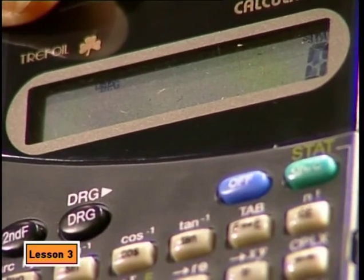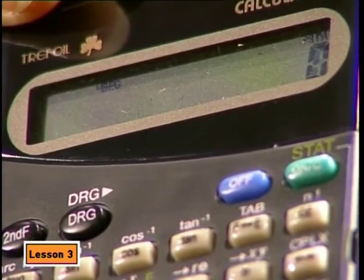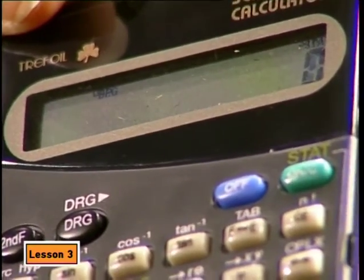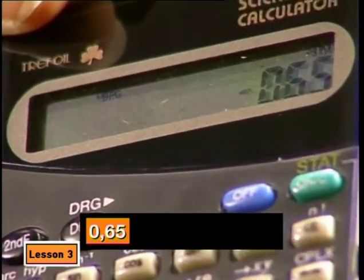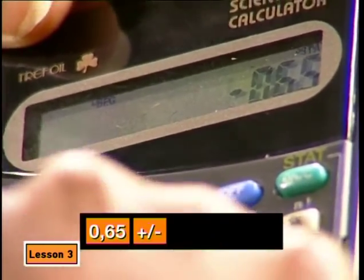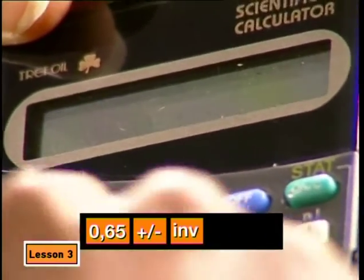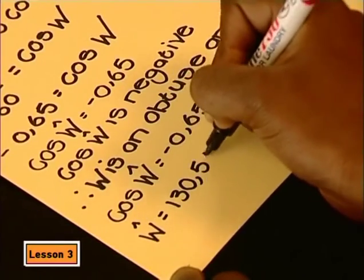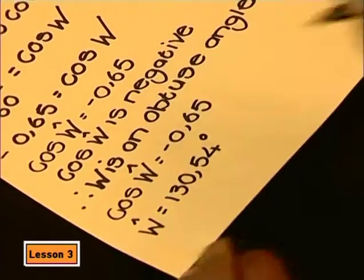Okay. So if we have cos of angle W, and we want W, we must use the inverse cos key on the calculator. So I put in 0.65, then make it negative with this key, then the inverse key, and then cos. Round it off to two decimal places. The answer I get is about 130.54 degrees, and that's an obtuse angle, just as you said.